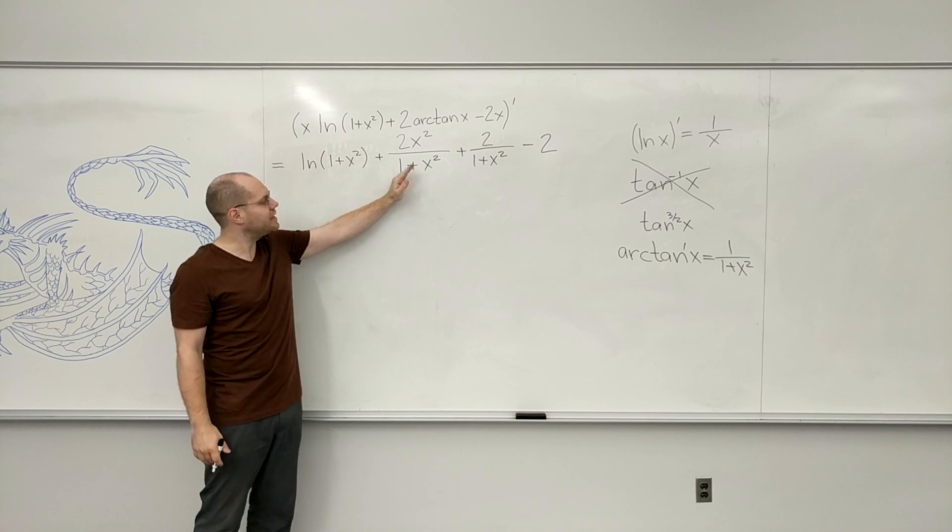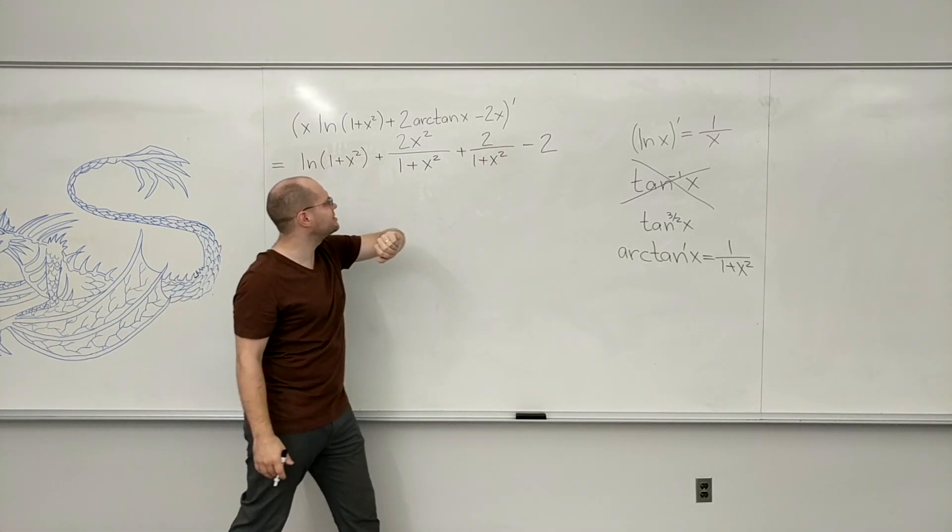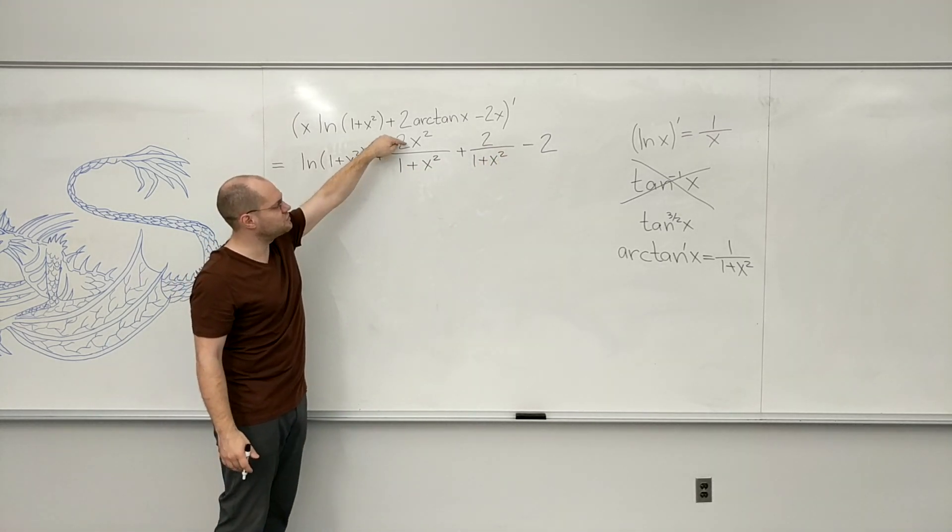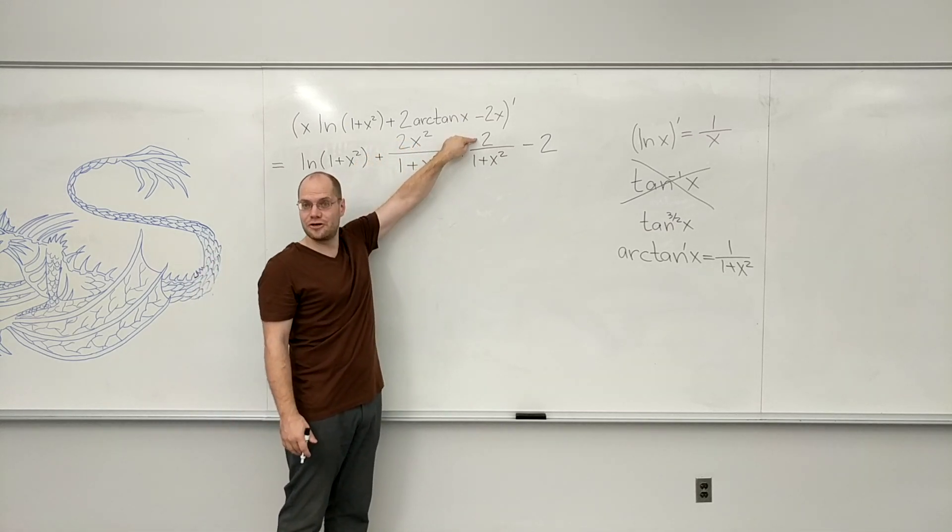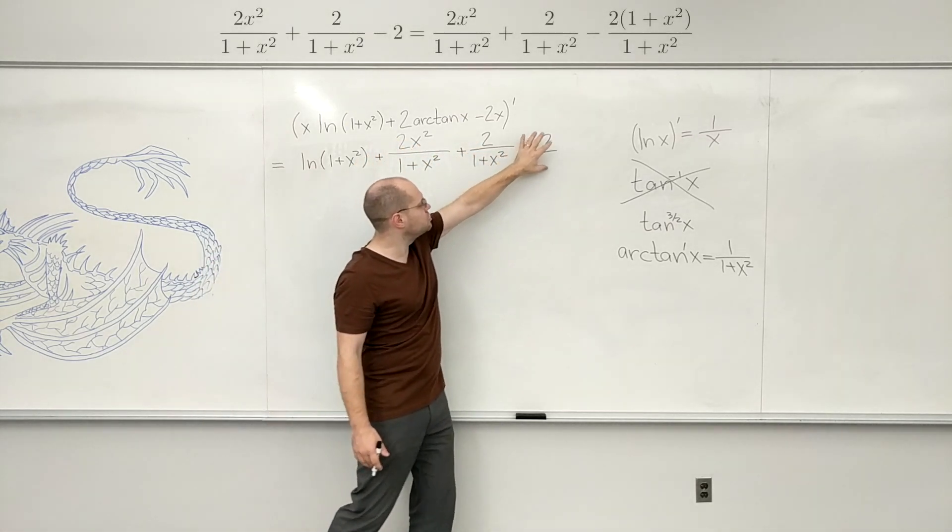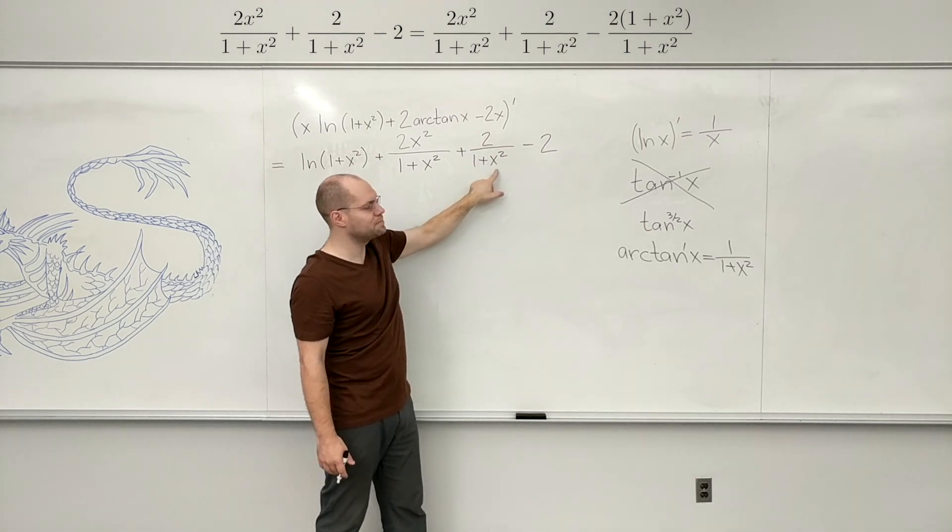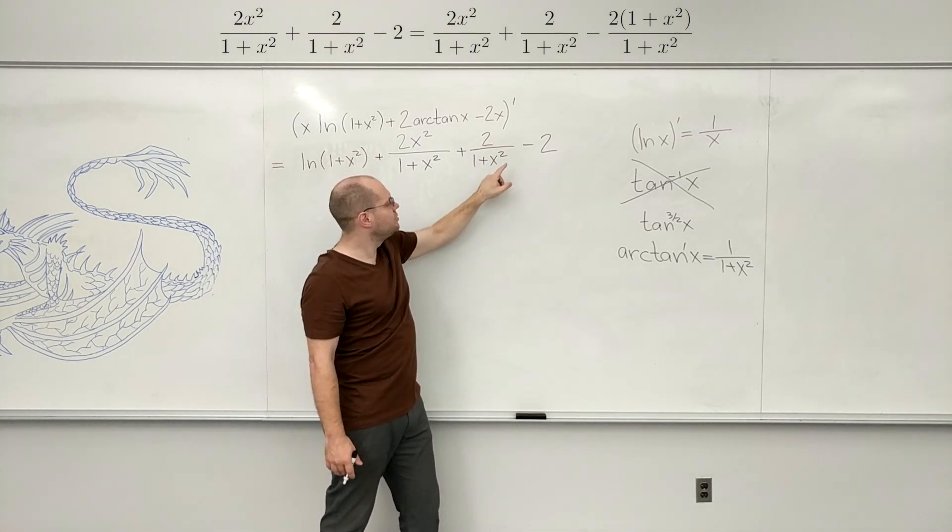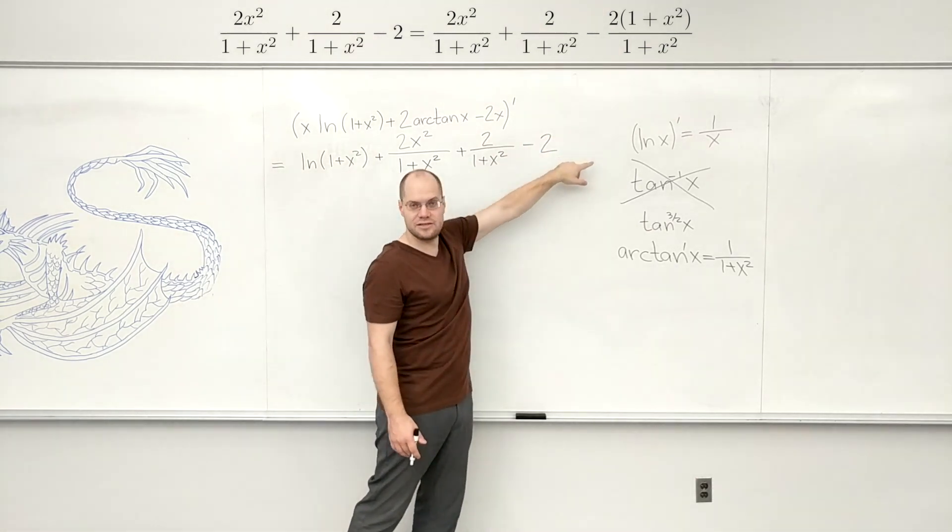And I think you should be able to handle this in your head entirely. You see that you have 2x squared plus 2—these are like terms. And when you turn this into a fraction with 1 plus x squared in the denominator, you'll get minus 2 and minus 2x squared.